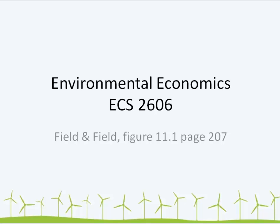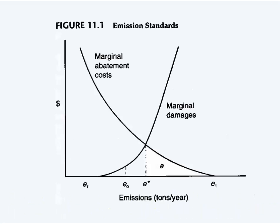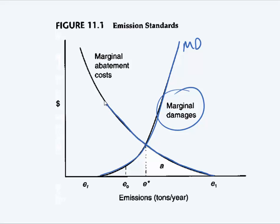We are looking at Figure 11.1 on page 207 of your textbook. Figure 11.1 shows how emission standards work. For example, we have a marginal damages curve shown here in blue — that's your MD curve, your marginal damages curve — and a marginal abatement cost curve shown here.